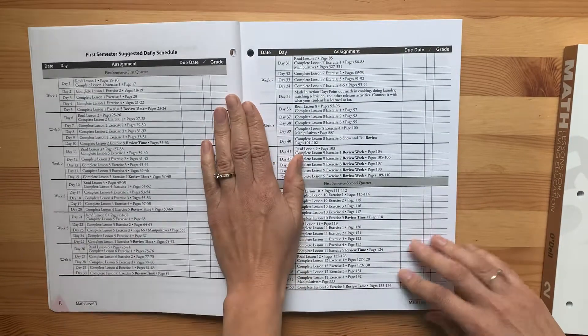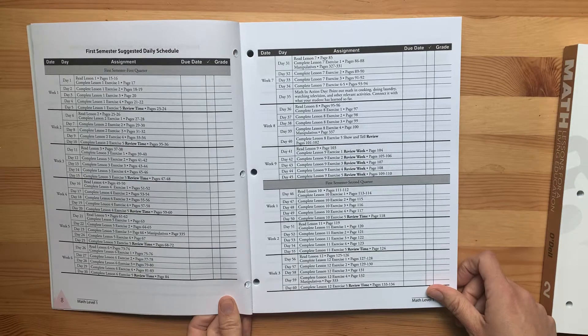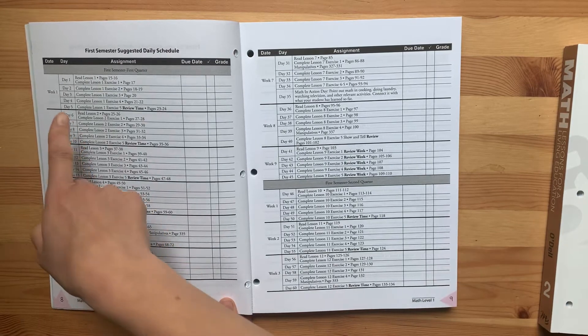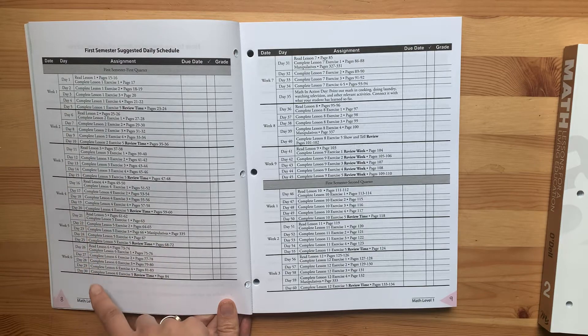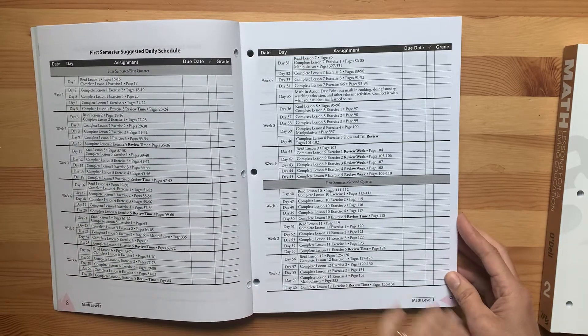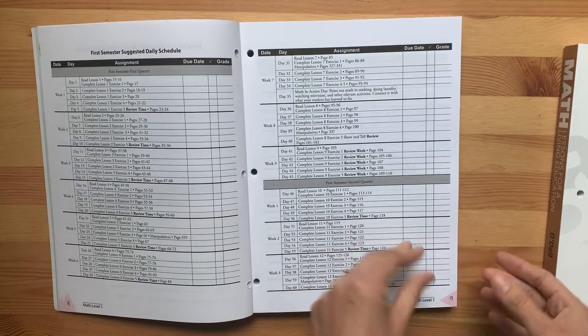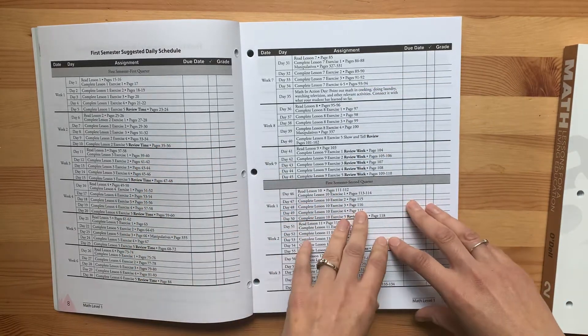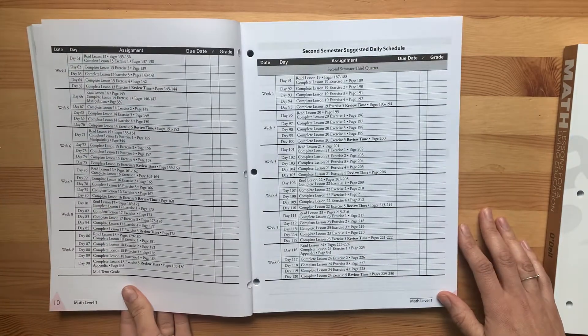First thing I want to show you is the scope and sequence here in Level 1. You could follow their schedule exactly for five days a week. You could leave it in the book and just go to the next lesson if you're not doing five days a week. Or you could tear out a week's worth at a time and put it in a folder. Some people have said that it's a little easier to tear out the pages.